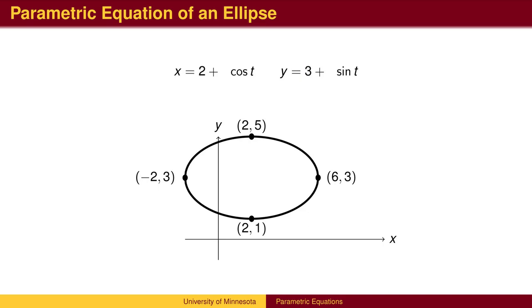The circle of radius 1 is also stretched by a factor of 4 in the x direction and a factor of 2 in the y direction. As t goes from 0 to 2π, the particle makes one trip around the ellipse counter-clockwise.